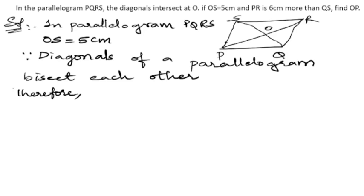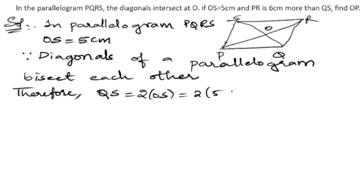We know that the diagonals will be divided. So QS can be written as double the OS. If we double OS we get QS, so we can write 2 into OS, which is 2 into 5 centimeters, so 2 fives are 10 centimeters. So we got QS equals 10 centimeters.